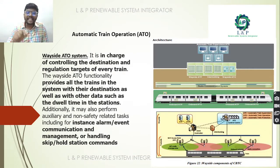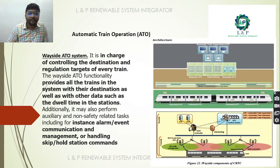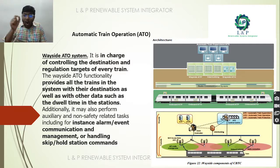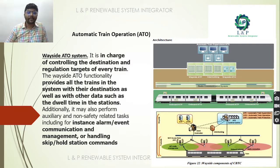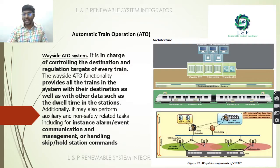The wayside ATO (automatic train operation) system is in charge of controlling destination and regulating targets for every train. It provides all trains in the system with their destination and other data such as dwell time at a particular station. It also plays an important role in creating instant alarms, event communication, and handling skip and hold station commands.